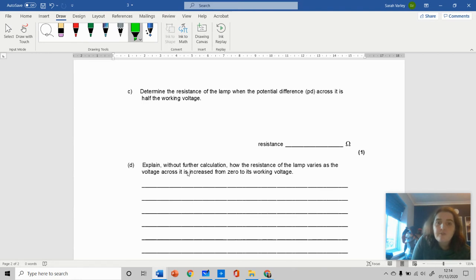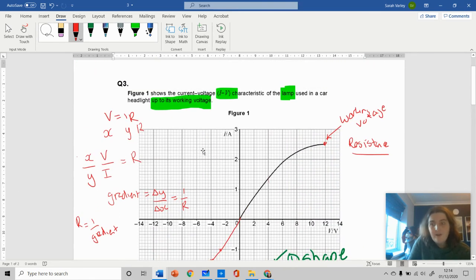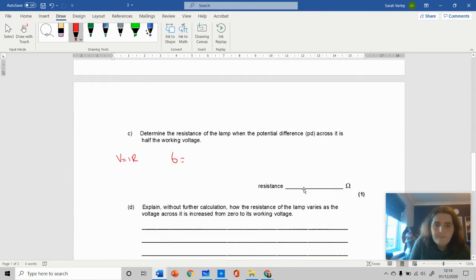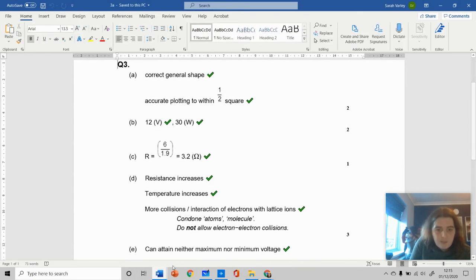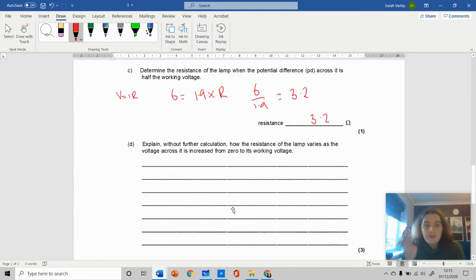Determine the resistance of the lamp when the potential difference is half the working voltage. V equals IR. Half the working voltage is 6 volts. When I'm at 6 volts, my current is 1.9 amps. So 6 divided by 1.9 equals my resistance, which is 3.2 ohms.